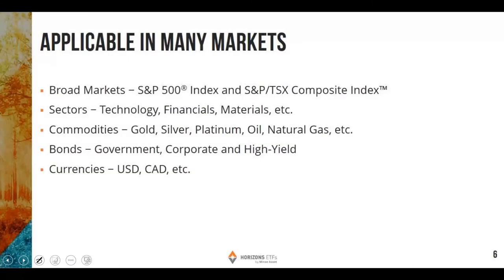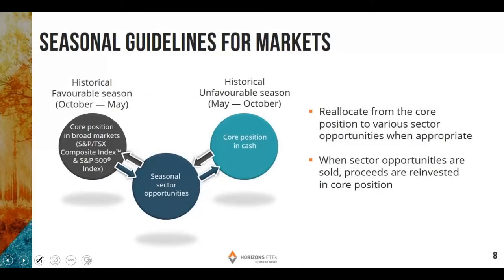Seasonal investing is applicable in many markets, including broad markets such as the S&P 500 Index or the S&P TSX Composite Index. It is also applicable in different sectors of the stock market, such as commodities, bonds, and currencies. A foundational component of the seasonal investing strategy is based upon data showing that stock market performance on average is stronger in the favorable period running from late October to early May, and weaker in the unfavorable season running from early May to late October.